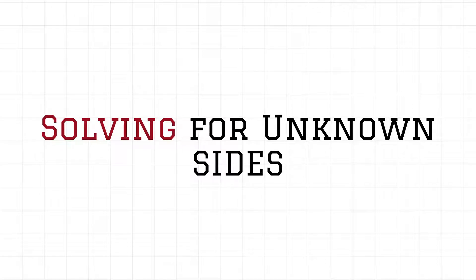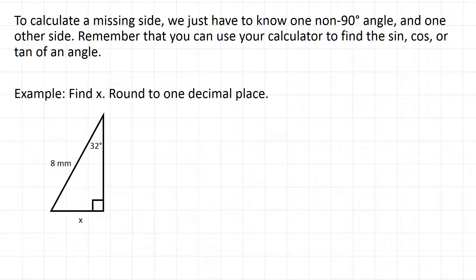We are now prepared to use those three trigonometric ratios that we've learned about to solve for an unknown side of a right triangle. In order to calculate a missing side in a triangle, we just have to know one of the non-90 degree angles and one other side in the triangle. That's all we have to have is those two pieces.